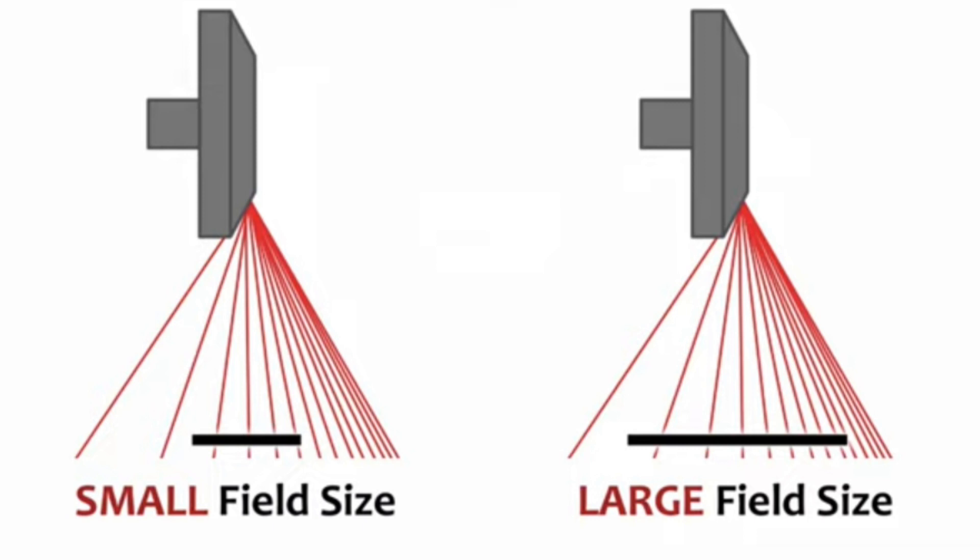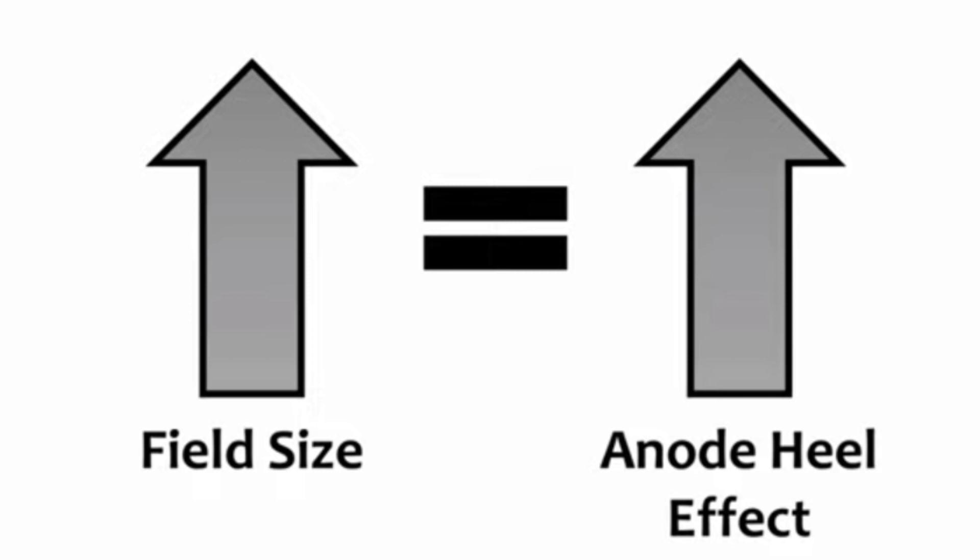Field size ke lehaz se agar hum Heel Effect ko dekhein: jitni field size increase hogi Heel Effect utna zyada hoga, jitni field size kam hogi Heel Effect utna kam hoga. Field size agar increase ho raha hai toh Heel Effect increase hoga kyunke us ke upar zyada rays, zyada intensity of radiation paregi. Yani field size ke saath Anode Heel Effect ka jo relation hai, directly proportional hai.